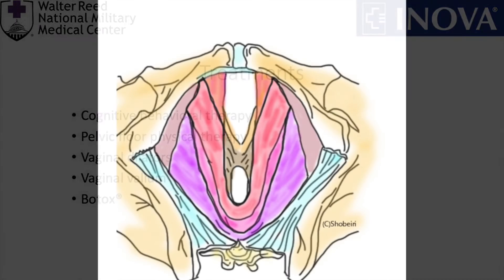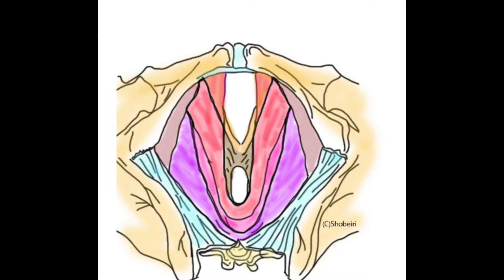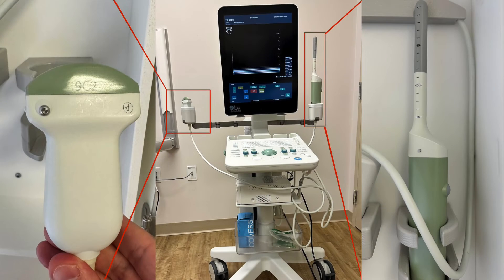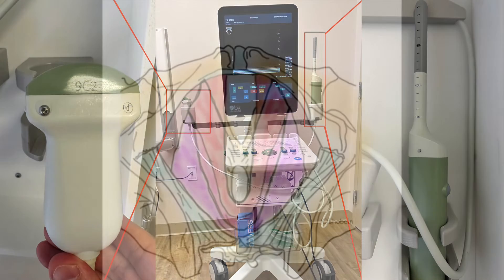In this video, we are going to demonstrate how Botox injections of levator ani muscles are performed with minimal blood loss under ultrasound guidance by avoiding a vaginal approach.